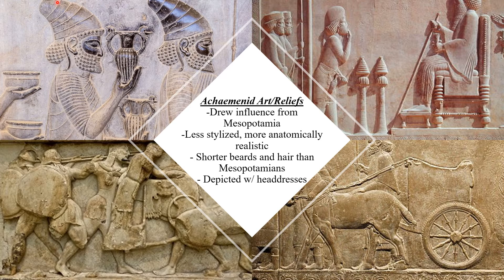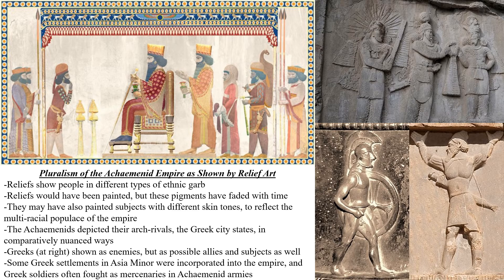We also see the Achaemenids displaying their male subjects with headdresses of some kind — these hats may have been helmets, or they may have been hats worn as a sign of modesty to protect their hair. We also see the pluralism of the Achaemenid culture in their relief art. The reliefs show people in a variety of ethnic clothing and garb, as seen in this Zoroastrian image here. The reliefs also would have been painted, and some scholars think the Achaemenids may have given their subjects different skin tones to reflect the multi-racial nature of the Achaemenid populace.